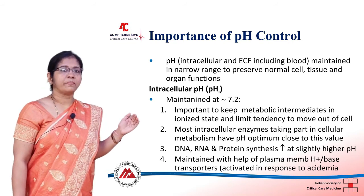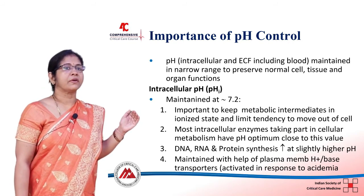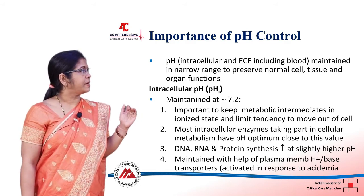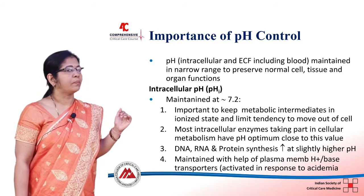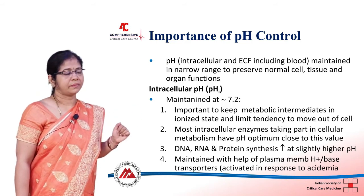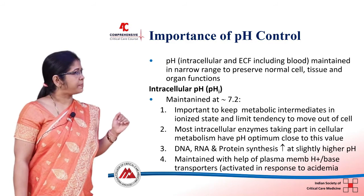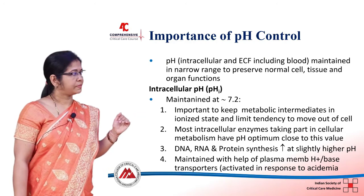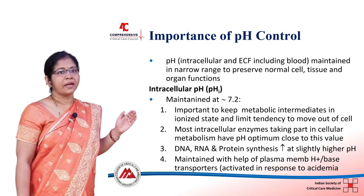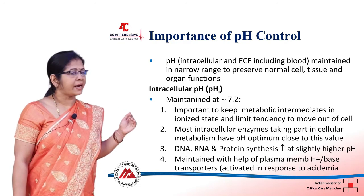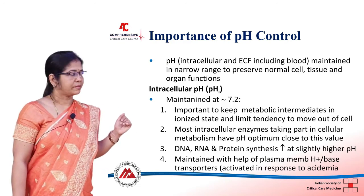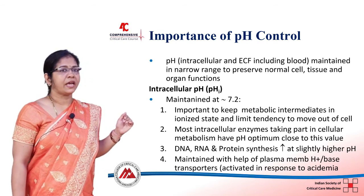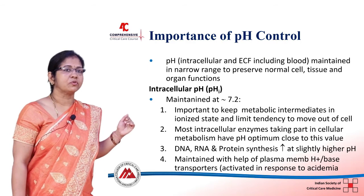The normal intracellular pH is maintained at around 7.2. It is important to keep metabolic intermediates in ionized state and prevent them from going out of the cell. Most intracellular enzymes that take part in cellular metabolism have a pH optimum closer to this pH. DNA, RNA, and protein synthesis occurs at a slightly higher pH.